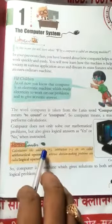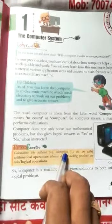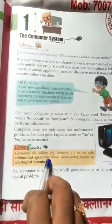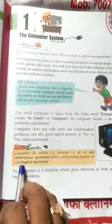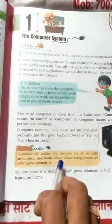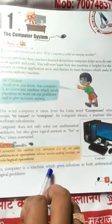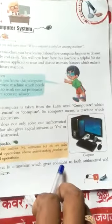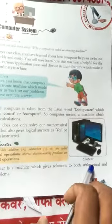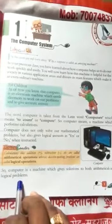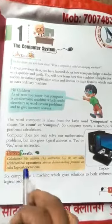Calculation like addition — Calculation में हम add कर सकते हैं, minus कर सकते हैं जिसे हम subtraction भी बोलते हैं — these are arithmetical operations, जिसे हम Arithmetical operation के नाम से जानते हैं. And decision-making problems are logical operations, जो हमारे किसी भी समस्याओं को solve करके प्रस्तुत करती है. So computer is a machine — computer एक यंत्र है — which gives solution to both arithmetical and logical problems, चाहें वो गणितीय हो या कोई भी हमारे द्वारा दिए गए निर्देश की समस्याएं हों.